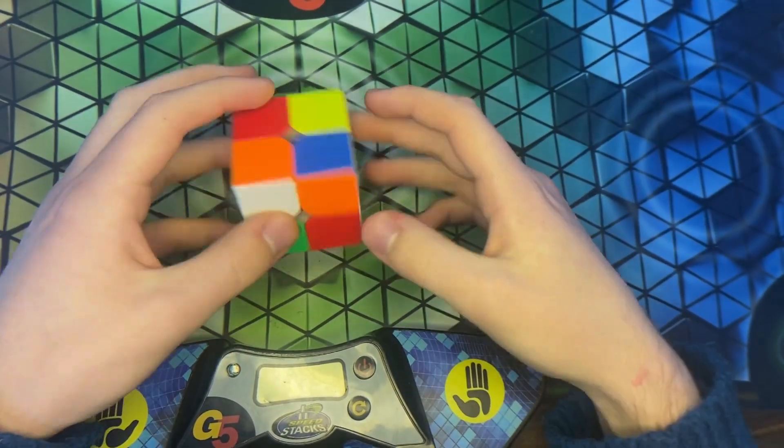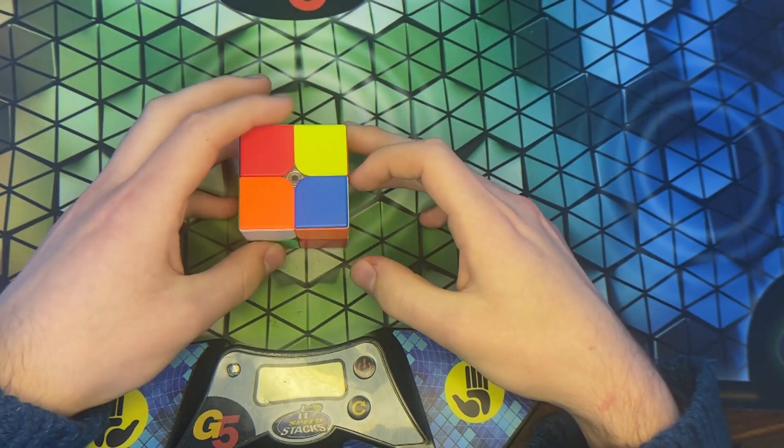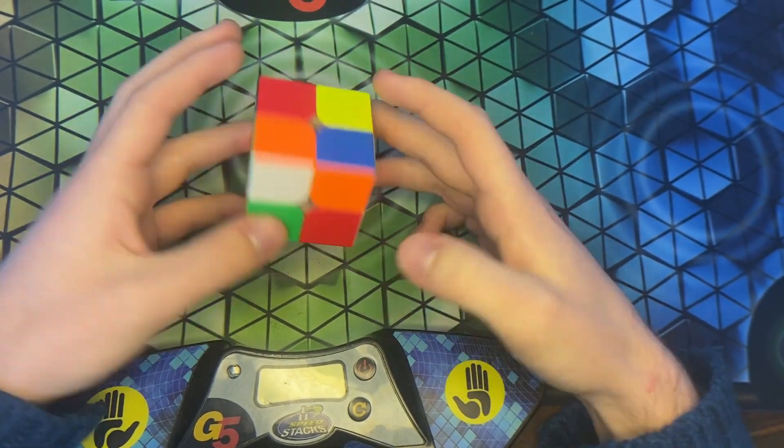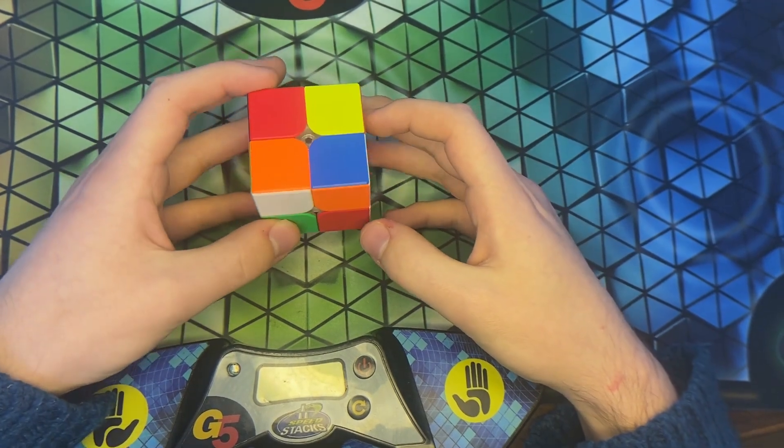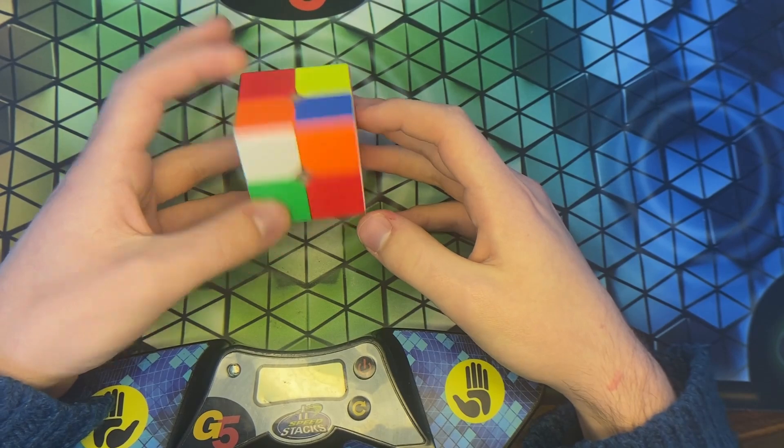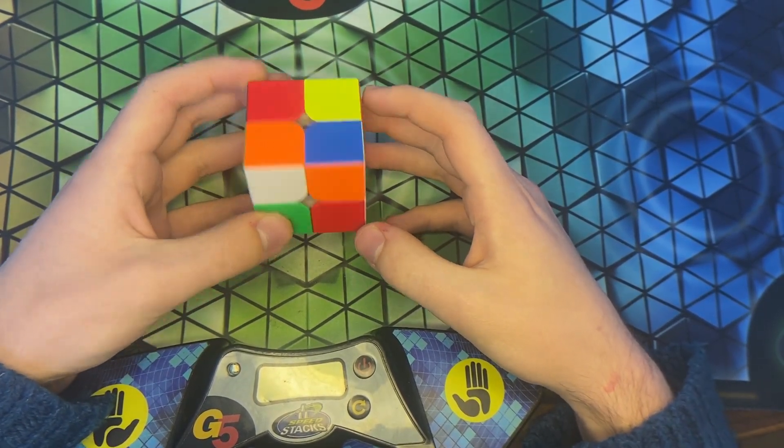Hey everyone. This is not quite a tutorial, more of a proof of concept for a 2x2 method I've come up with called the GEG method. This is based off domino reduction corners, and it's quite good and is very move-optimal.